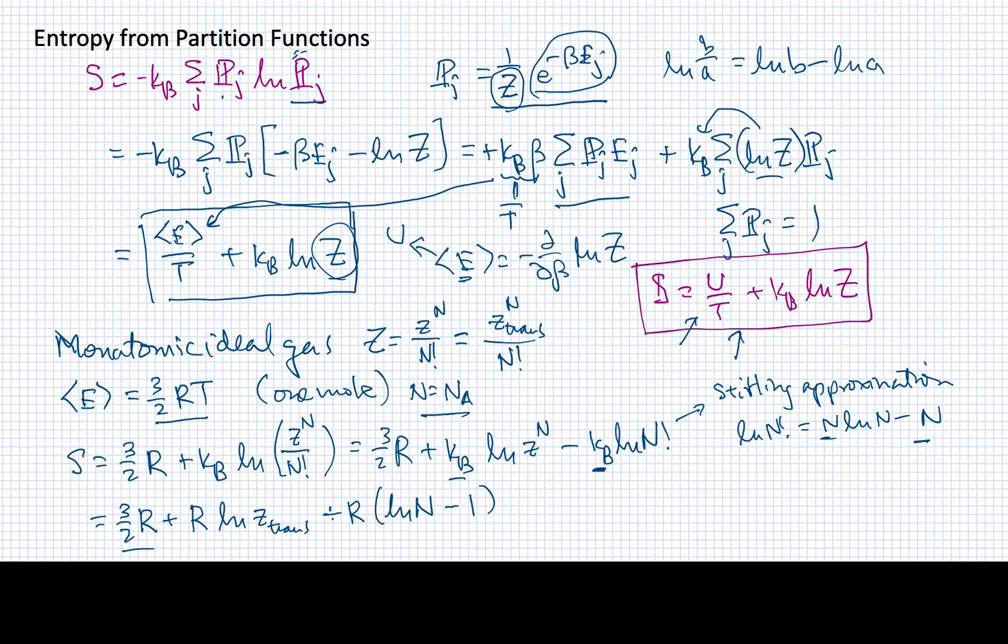I'll have minus R times minus 1, so that's a plus R. I can add it over here to get five halves R plus R log Z minus R log n, so I'll have R log of little z over n.